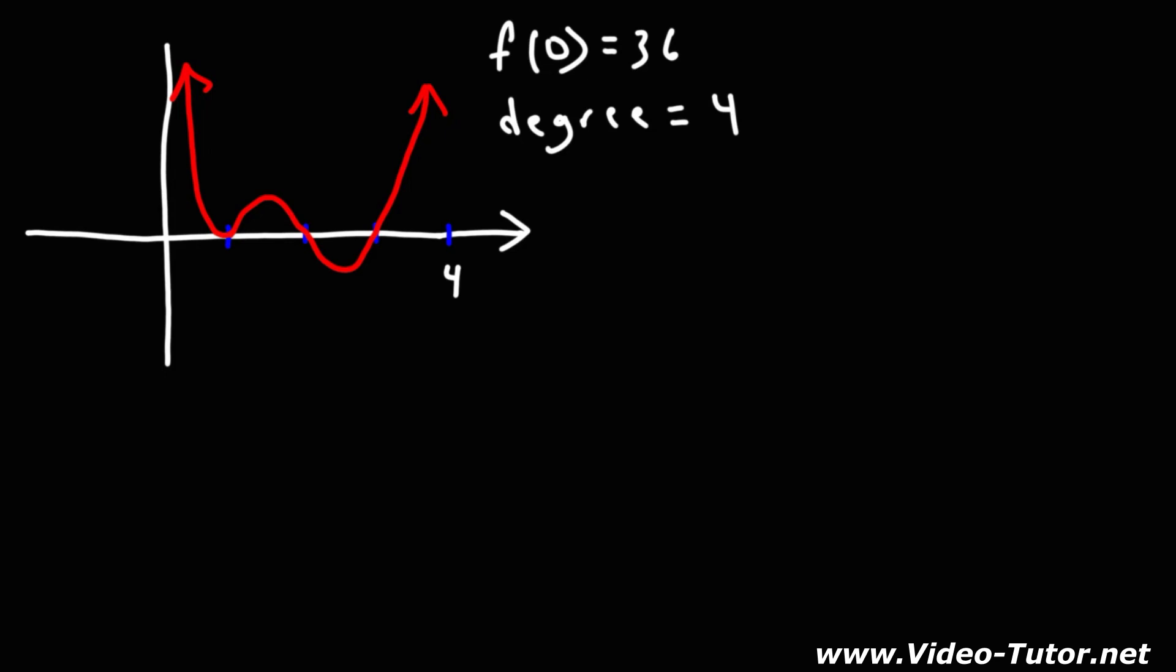How can we find the polynomial function of this graph? How would you do it? We're given the x-intercepts, we're given one point which is the y-intercept which has a value of 36, and we know we're dealing with a fourth degree polynomial. With this information, how can we find and write a polynomial function that corresponds to this graph?